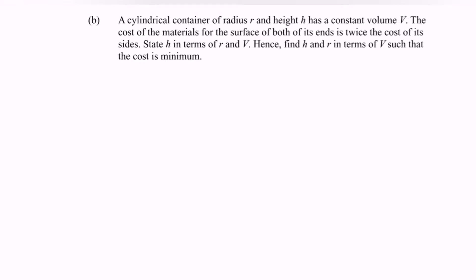Hi everyone, welcome to my channel. In this video I'm going to discuss an example for the optimization problem. A cylindrical container with radius R and height h has a constant volume.